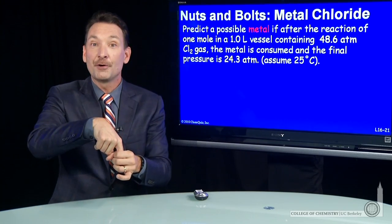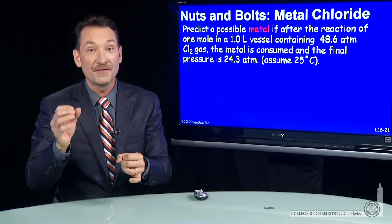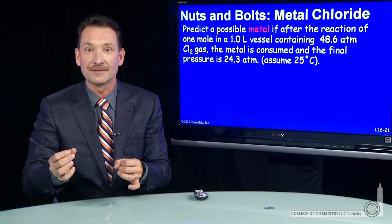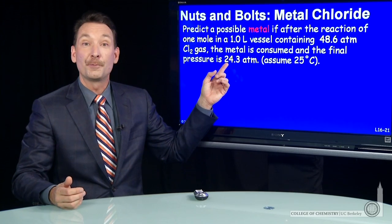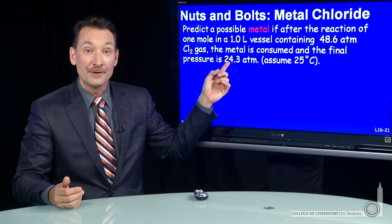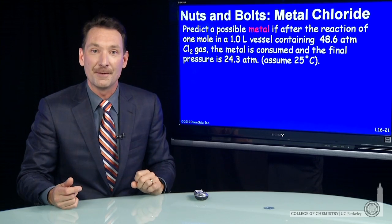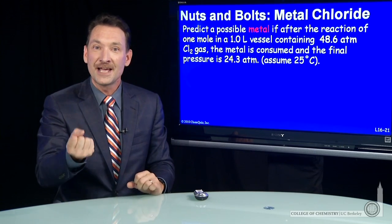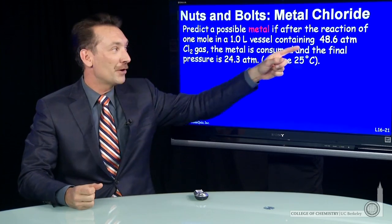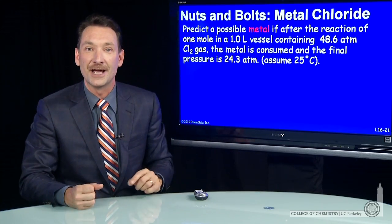Now, that 48.6 atmospheres refers to a specific number of particles of chlorine gas. I'm going to let the reaction occur. After the reaction occurs, the pressure of chlorine gas has gone down to 24.3 atmospheres. So some of the chlorine has been consumed. The question is, can we figure out what the metal is by knowing how much chlorine it consumes in this reaction?